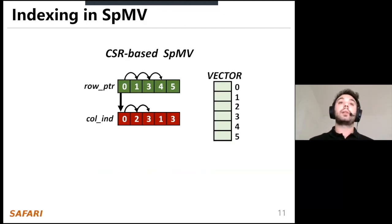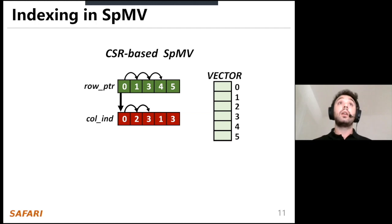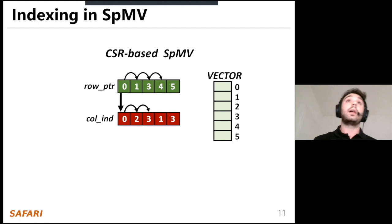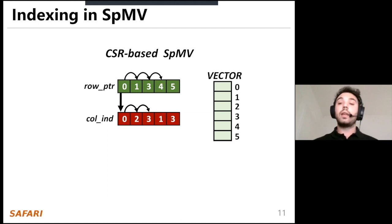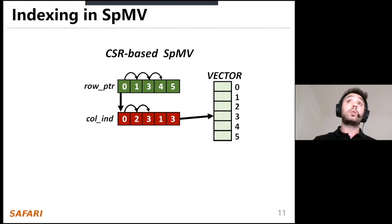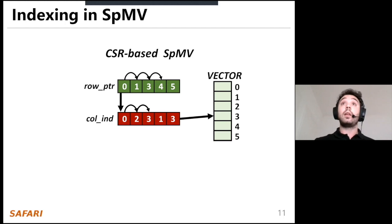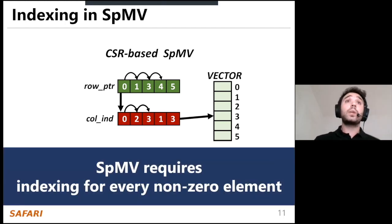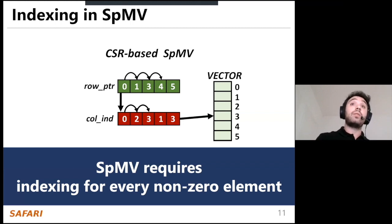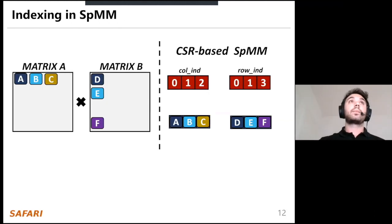Let's see an example of CSR-based SPMV indexing. First, we iterate over the row pointer to find how many elements are in each row. Then we go into the column index, search for those elements, find their column indices, and use these indices to perform the correct multiplication with the corresponding elements of the vector. SPMV therefore requires discovering the position of every non-zero element.